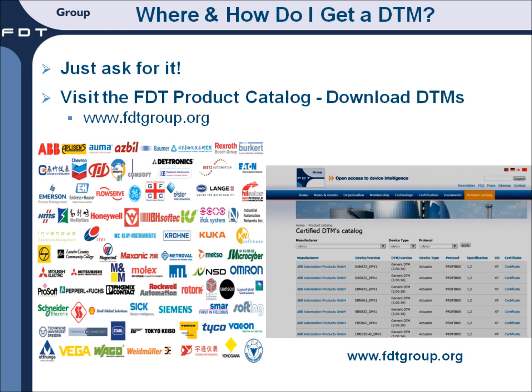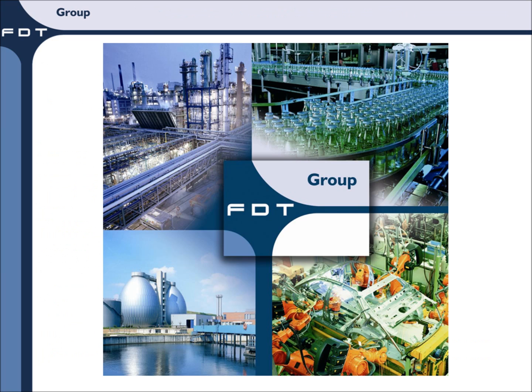Where do you go to get a DTM? In most cases, you just have to ask for it. You probably want to start by asking your device supplier for the DTM if it didn't come with the device, or go to the device supplier's website and download it. Or you can visit the FDT product catalog and download DTMs there. The website address is www.fdtgroup.org. Thank you for viewing this video — more information on the FDT technology and DTMs is available at our website. Thank you.